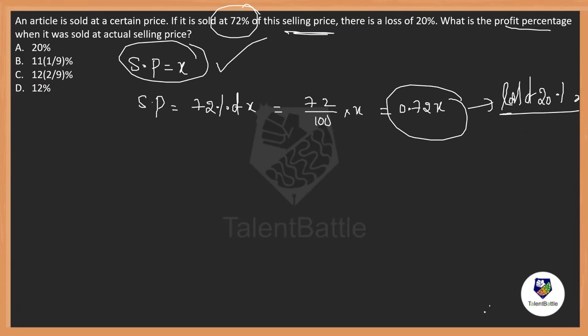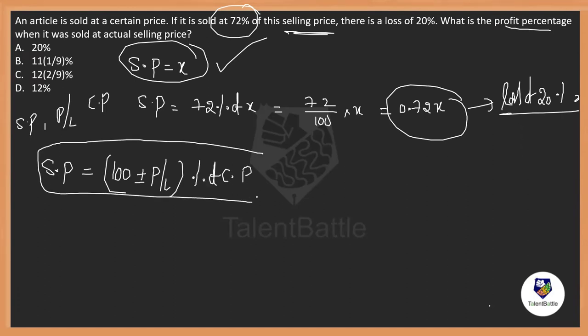We are supposed to find out what would be the profit percentage if they are going to sell it for X rupees. Basically, there is a shortcut. Whenever SP or profit or loss or CP occurs, you can always apply this trick. That is, SP is always equal to 100 plus or minus profit or loss percentage of CP. It works out for all the problems.